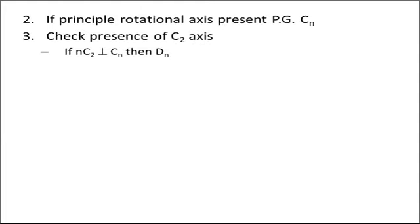If the principal axis of rotation is present, then the point group will be Cn. After confirming the presence of principal axis, you have to find the presence of C2 axes. If there are N C2 axes perpendicular to Cn, then your point group instead of Cn will become Dn.